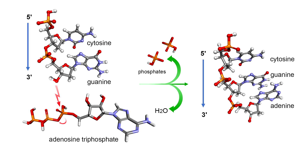These bonds are between the sugar base of one nucleotide and the phosphate group of the adjacent nucleotide. The sugar is the 3-prime end and the phosphate is the 5-prime end of each nucleotide.